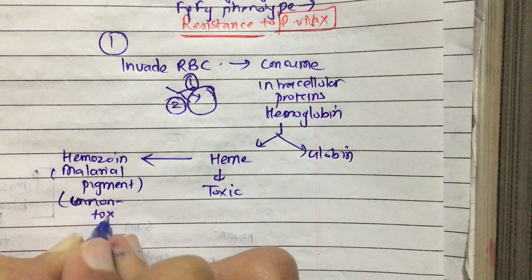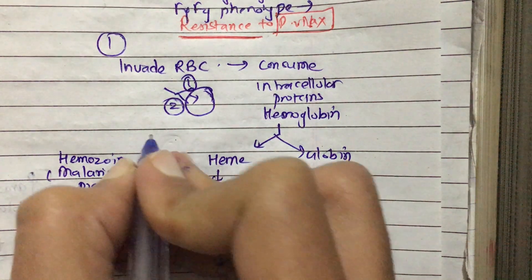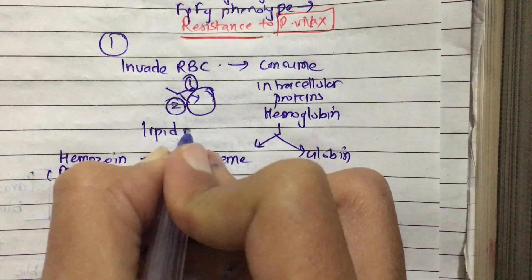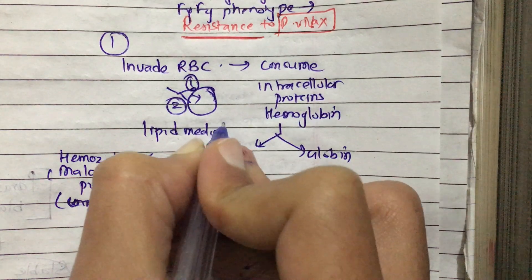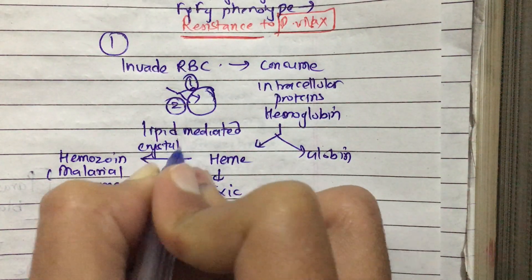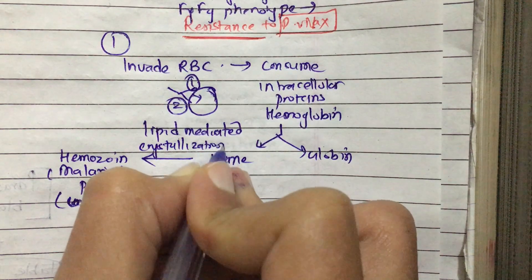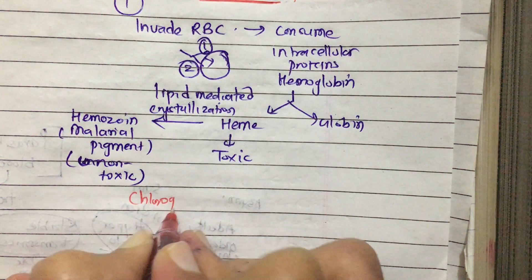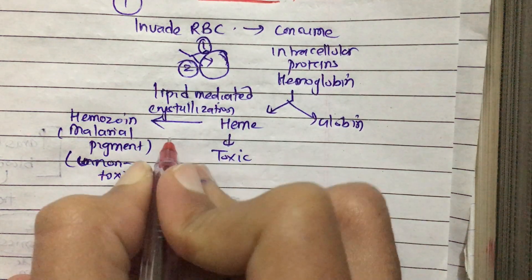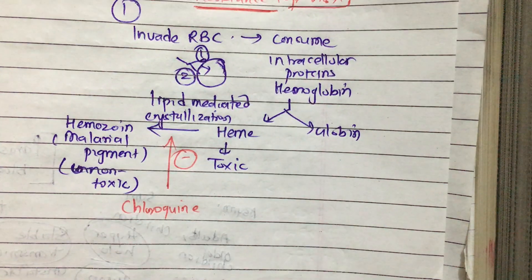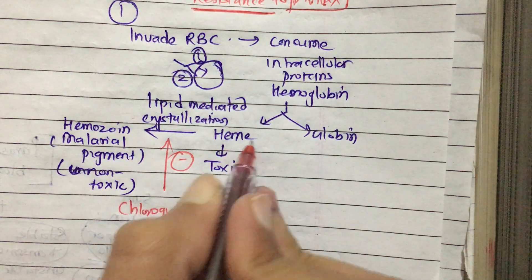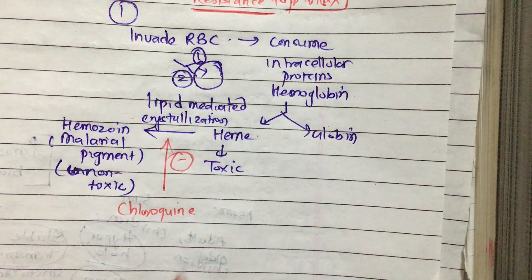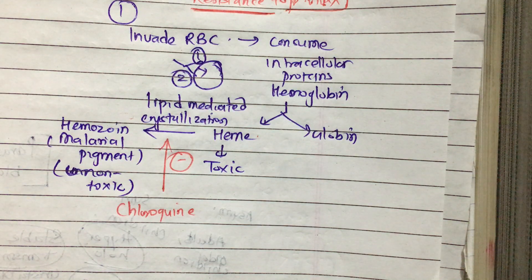The heme is converted to hemozoin, which is the malaria pigment. Heme is toxic to the plasmodium, whereas hemozoin is non-toxic, so the toxic product is converted to a non-toxic one via lipid-mediated crystallization. Chloroquine, an anti-malarial drug, inhibits the formation of hemozoin from heme, causing heme to accumulate inside the RBC and killing the plasmodium.